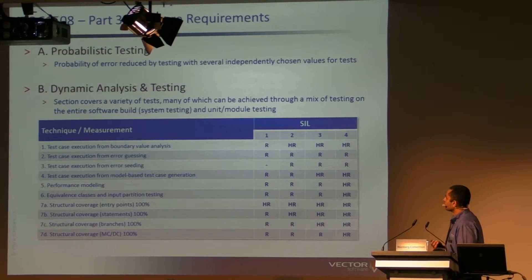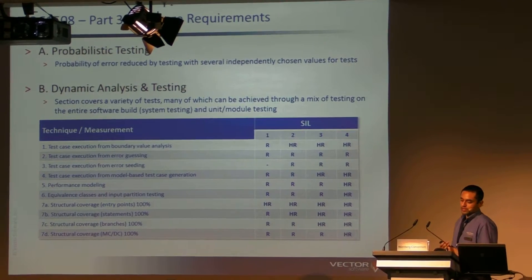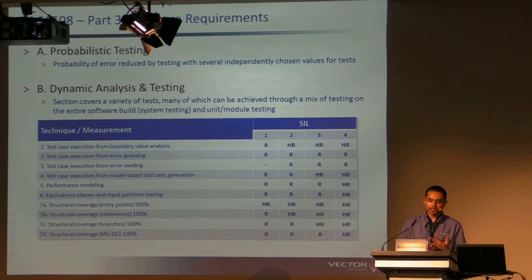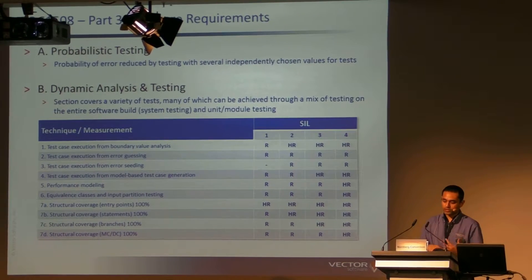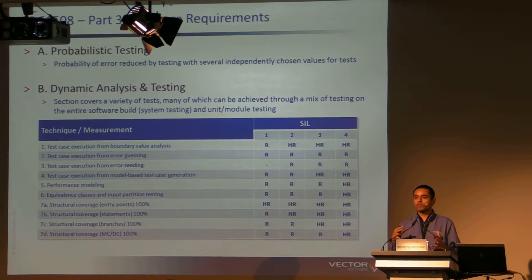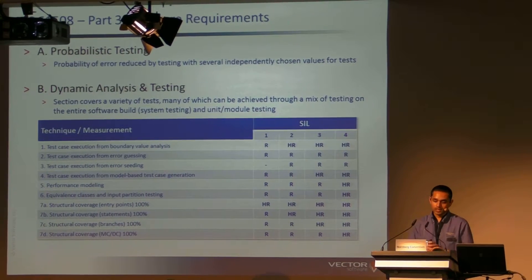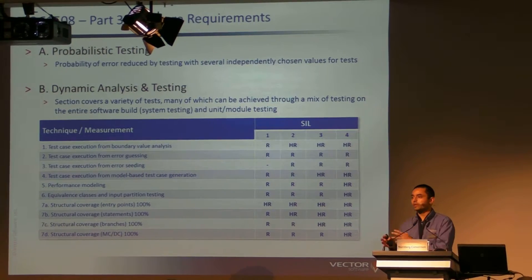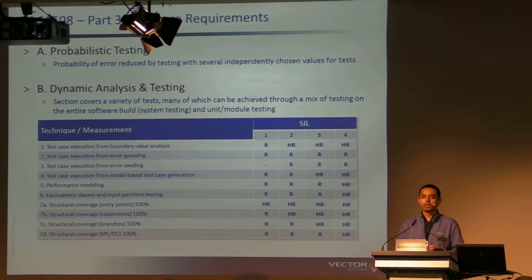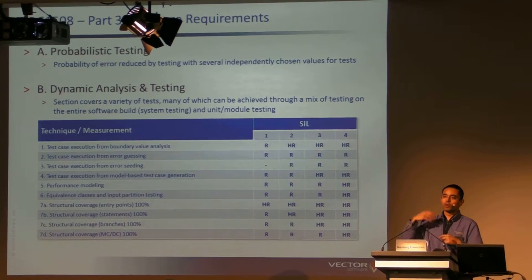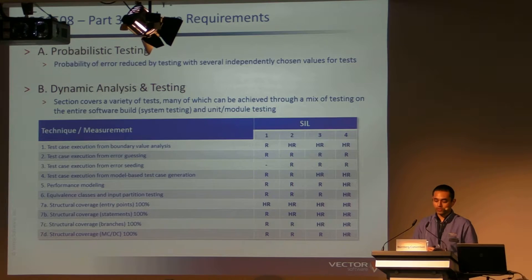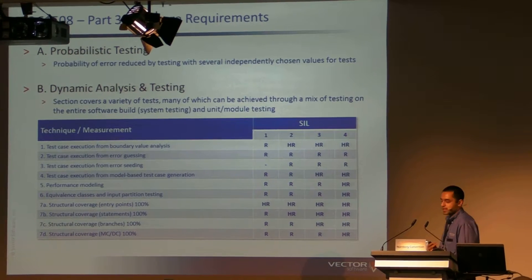Performance modeling is point five. The idea here is calculating the performance of things like processor time, communications bandwidth, and storage device utilization. So testing the behavior of the system when it's under stress. Test automation tools are very good at helping with this, where you can create loaded scenarios on the system — maybe calling the same function a thousand times just to see what the behavior is and making sure that it handles that.